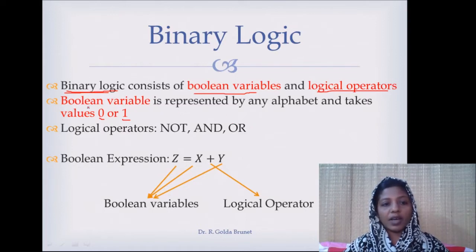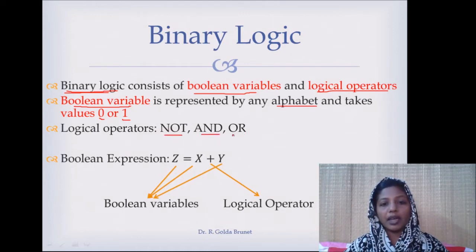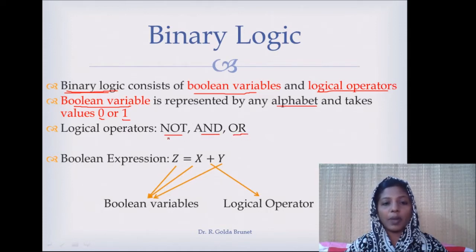When you consider a Boolean variable, we will represent any Boolean variable using an alphabet, as usual in any other algebra. Logical operators include the NOT operator, the AND operator, and the OR operator. These 3 operators are fundamental binary logic operators.